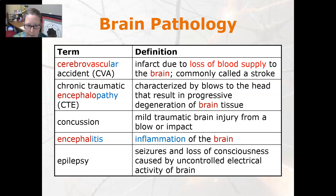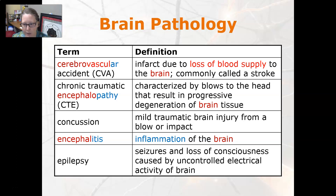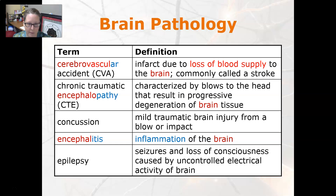Chronic traumatic encephalopathy is characterized by blows to the head that result in progressive degeneration of brain tissue. A concussion is a mild traumatic brain injury from a blow or an impact. If you keep getting concussions over and over — especially in sports such as American football — the blows to the head can cause chronic traumatic encephalopathy.